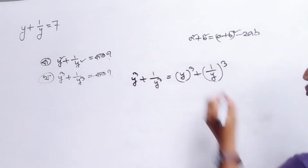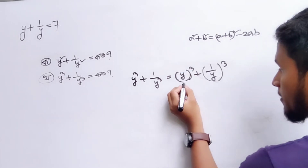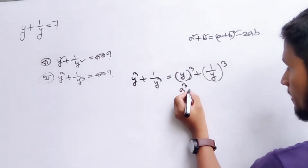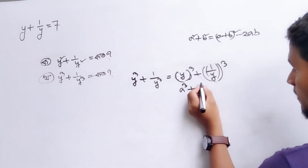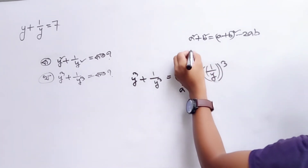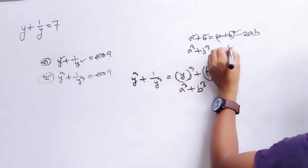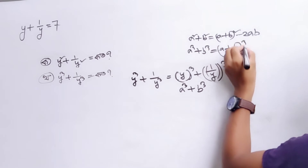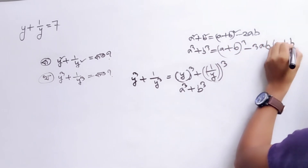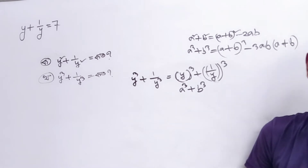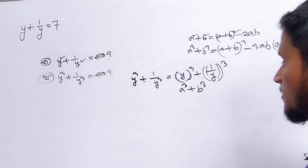Now, how do we get to do this? This is equal to y. This is equal to 2. This is plus. a³ plus b³ is equal to (a + b)³. a³ plus b³ equals a² minus 3ab into a² — 5b minus b². Now, this is equal to 2. Now let's look at that. This is equal to 1.